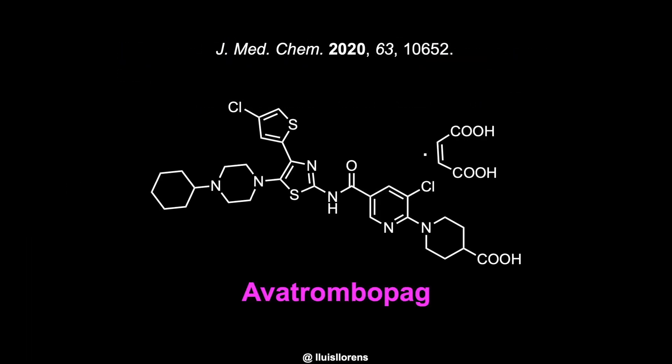Avatrombopag is a nonchiral compound that contains six rings in the molecule, five of which are heterocycles. The four six-membered rings are cyclohexane, piperazine, pyridine, and piperidine.